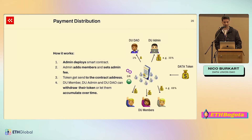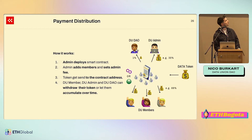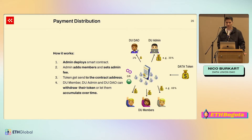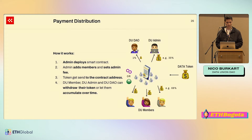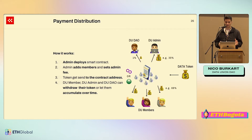Let's see how this payment distribution works. You can see the smart contract there — it is a smart contract. Essentially, tokens get sent into that contract and then distributed to the different members.